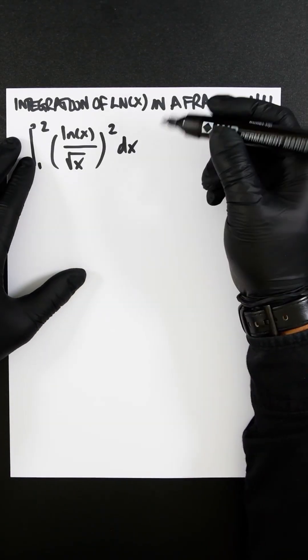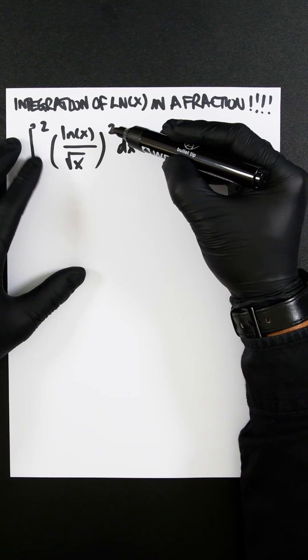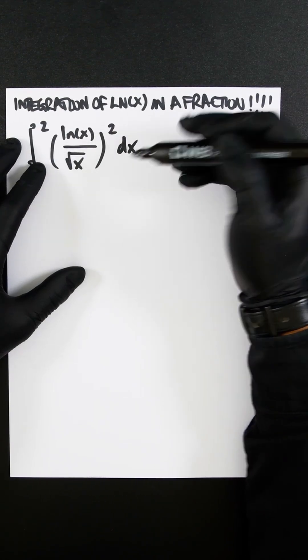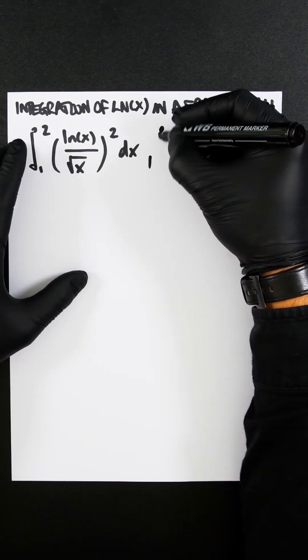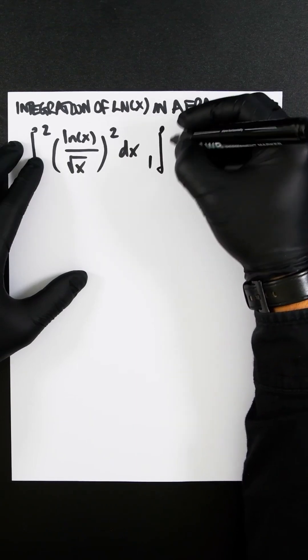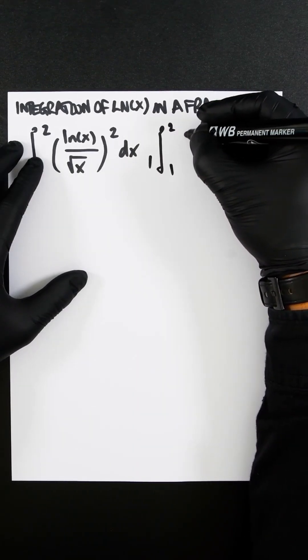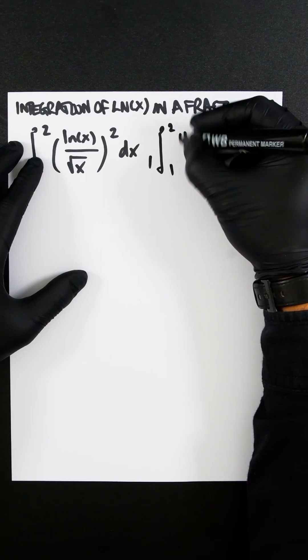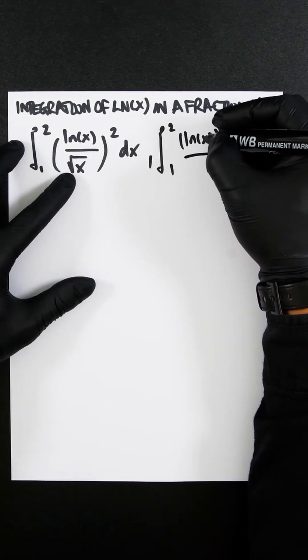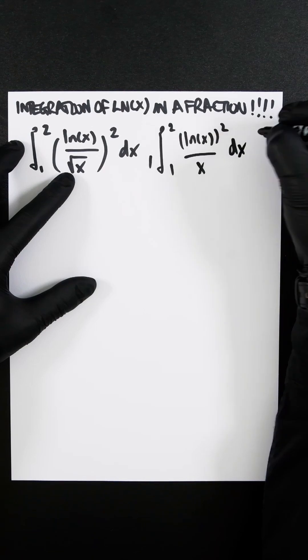Let's integrate this ln problem. So the first thing I'm going to do is get rid of this nasty squared term here. So this whole integral, once the squared is expanded, is going to become ln x all squared over the square root of x squared is x dx.